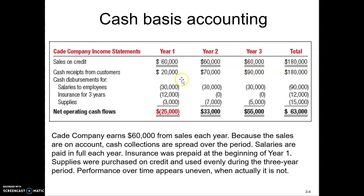Even though their business has been steady, it looks like year one revenue was real low and year three was great. Their salaries would be deducted each year, but the insurance — they paid for a three-year insurance policy. So they deducted all $12,000 of insurance expense in year one under the cash basis. It looks like they had a big loss in year one and did great in year three, when really their business was pretty steady. The cash basis doesn't give the clearest picture of how the business did.